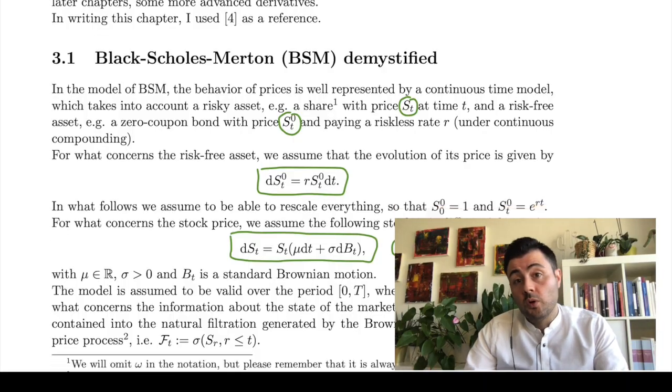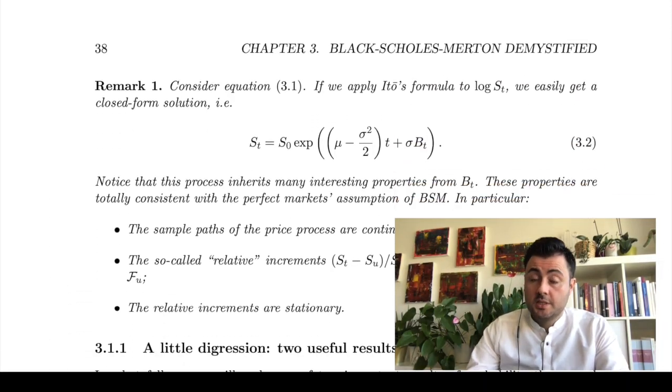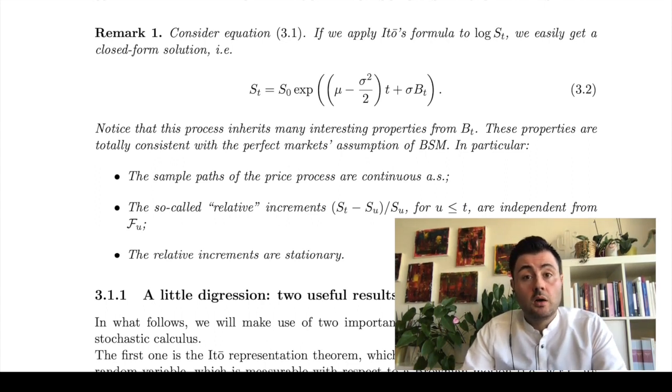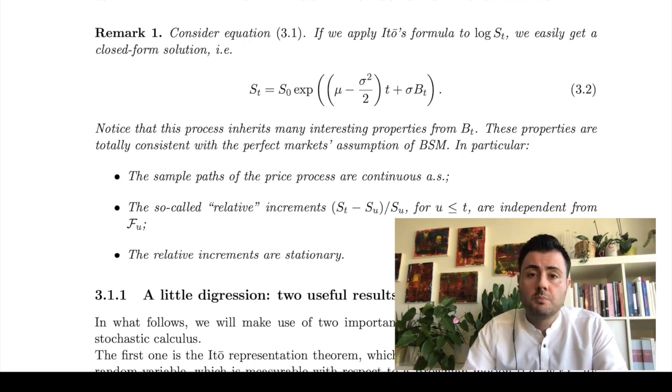Further, the geometric Brownian motion has interesting properties that are also very useful from a statistical point of view. First of all, we have that the trajectories of the price process are almost surely continuous.